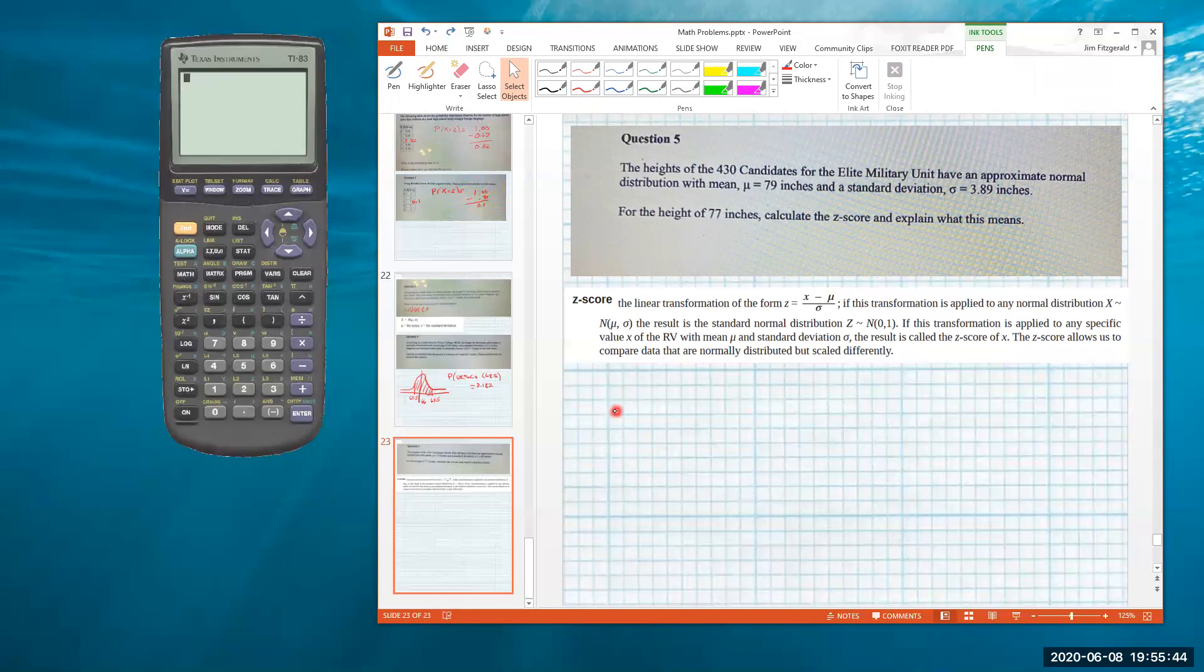So in this case, our mean here is 79 inches. You notice they tell us that there are 430 candidates—it doesn't really matter, we don't really care about that. We just need to know that it's an approximate normal distribution, the average is 79 inches and the standard deviation sigma is 3.89.